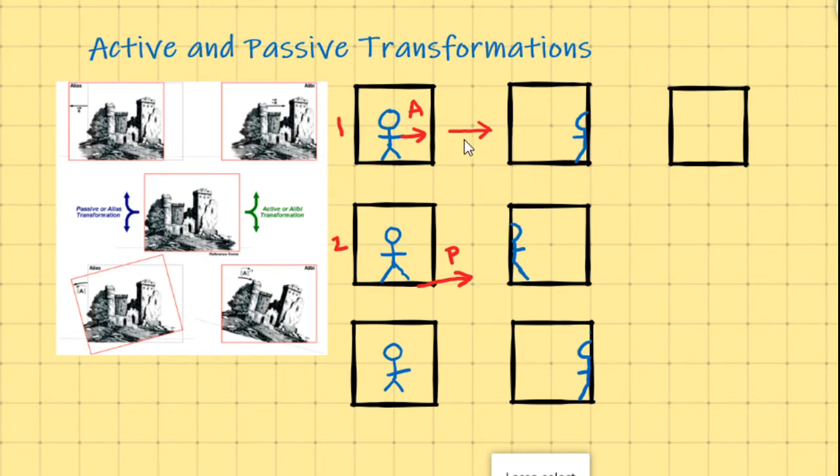Now though, think about this. What if you perform an active transformation, leaving the little man over on the right here, and then you perform a passive transformation. So that would mean dragging again the frame to the right-hand side. So that would pull the frame over, leaving the man in place. And if you think about it, that will leave you back where you started.